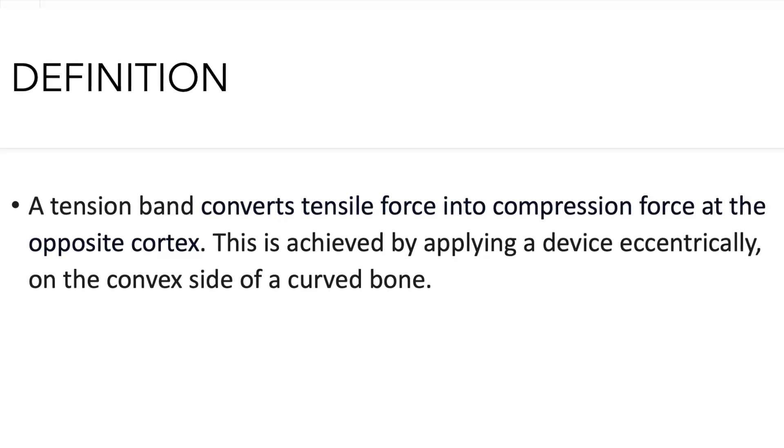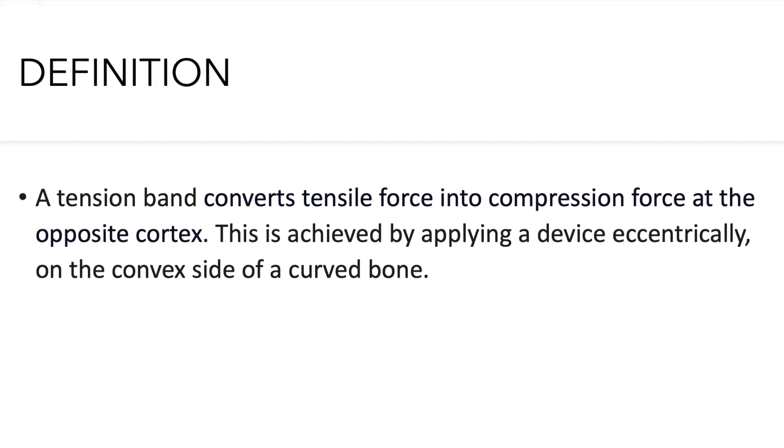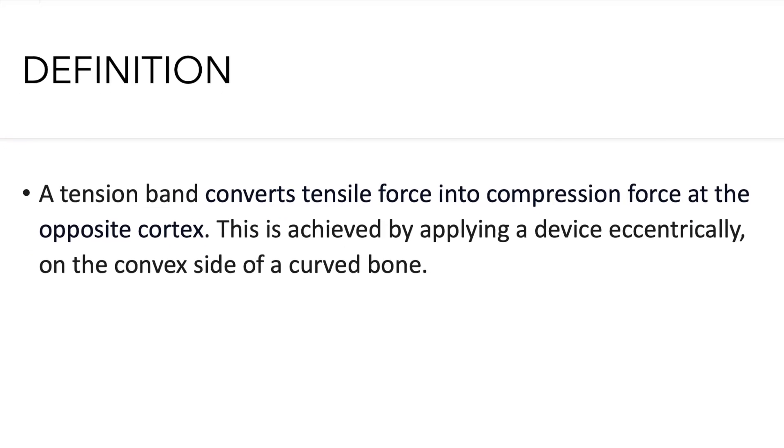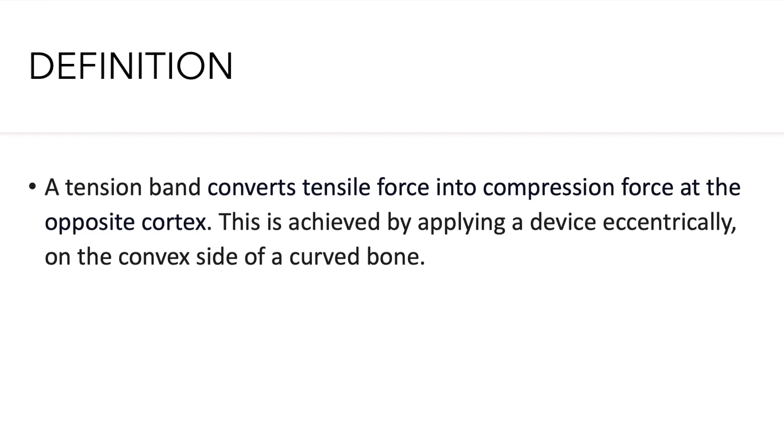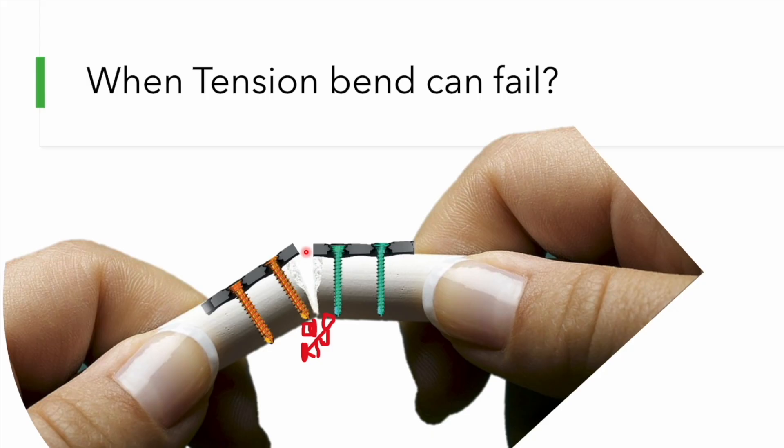In summary, the tension band principle can be applied to any fixation device placed on the eccentric side — away from the bending force — and should only be used in simple fractures without comminution on the compression side. When comminution is present on the compression side, stronger biomechanical constructs such as dual plating or intramedullary nailing should be considered instead.